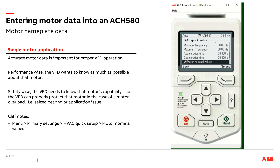So there you go — we just set up the ACH 580 based on the motor nameplate information. This drive is now ready to properly control and protect this motor. One of the key reasons to enter nameplate data correctly is so the VFD can safely protect the motor. It needs to know how many amps the motor is rated at, so if the motor gets into an overload situation — whether it's a bearing seizing up or something jamming the application — the drive can trip offline if it sees the motor drawing too much current for too long.